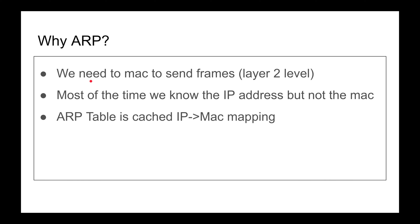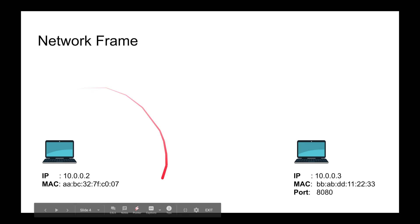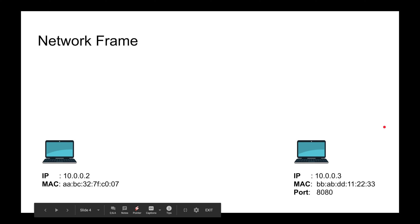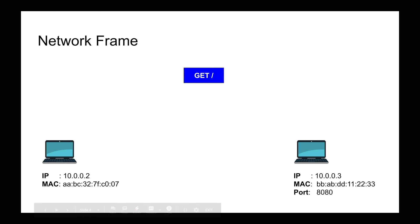So let's talk about how the network frame looks. Here's my machine with IP address 10.0.0.2 and its MAC address — I'll shorten things by referring to the IP address as a number and the MAC address by the first two letters, just to simplify the drawing. The destination server is 10.0.0.3 listening on port 8080 — let's say it's an Express or Django server. I want to make a GET request, so I start building that GET request and set the destination port.